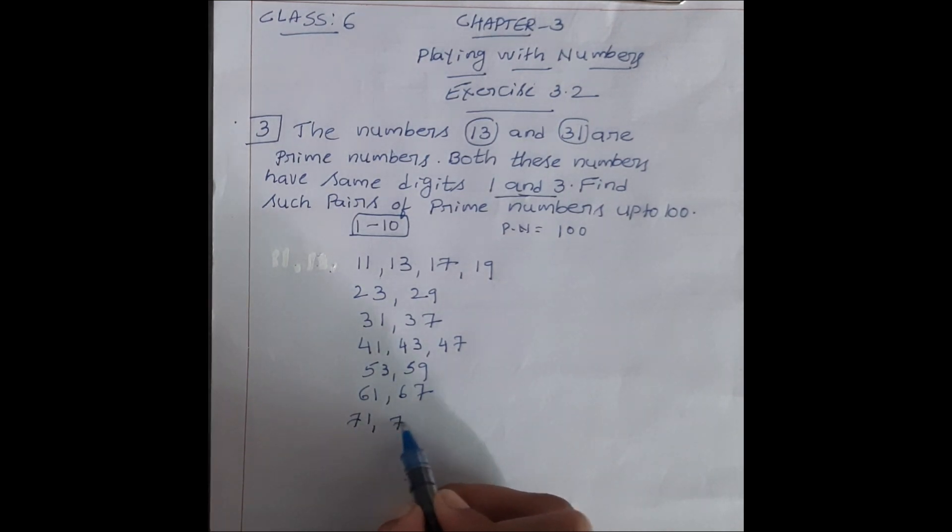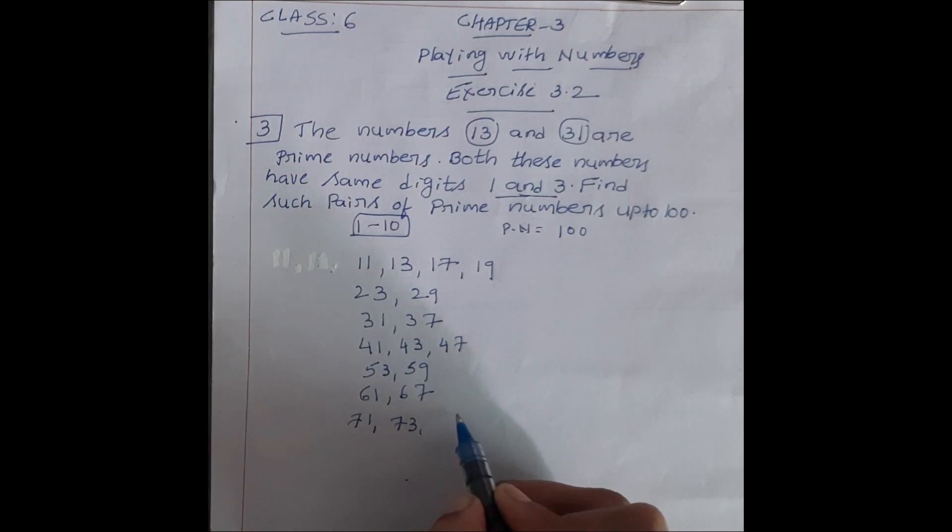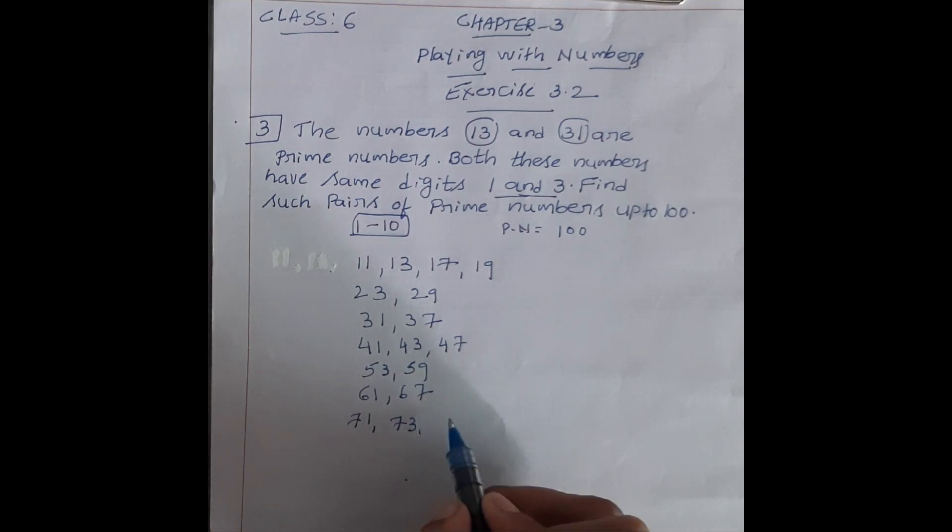Next 50 prime number nahi, 51 bhi nahi, 52 bhi nahi, 53 prime number, 54 nahi, 55 nahi, 56 nahi, 57 nahi, 58 nahi, next 59 prime number. Next 60 prime number nahi, 61 prime number. Next 62 prime number nahi, 63 nahi, 64 nahi, 65 nahi, 66 nahi, next 67 prime number. 68 prime number nahi, 69 nahi, 70 nahi, 71 prime number, 72 prime number nahi, 73 prime number. 74 prime number nahi, 75 nahi, 76, 77, 78, 79 prime number.